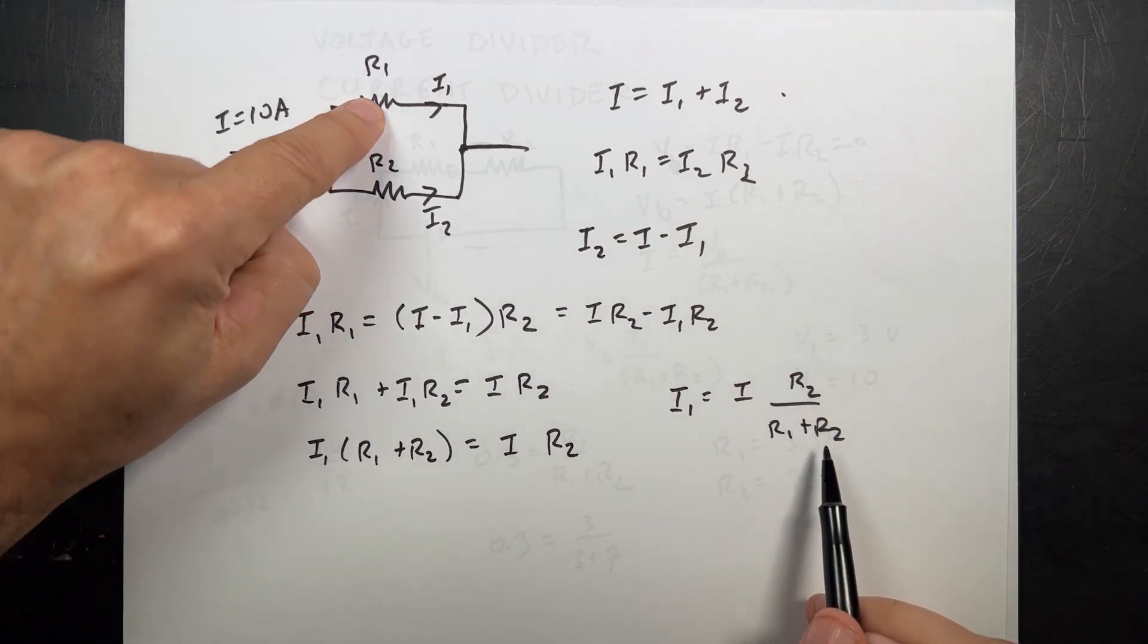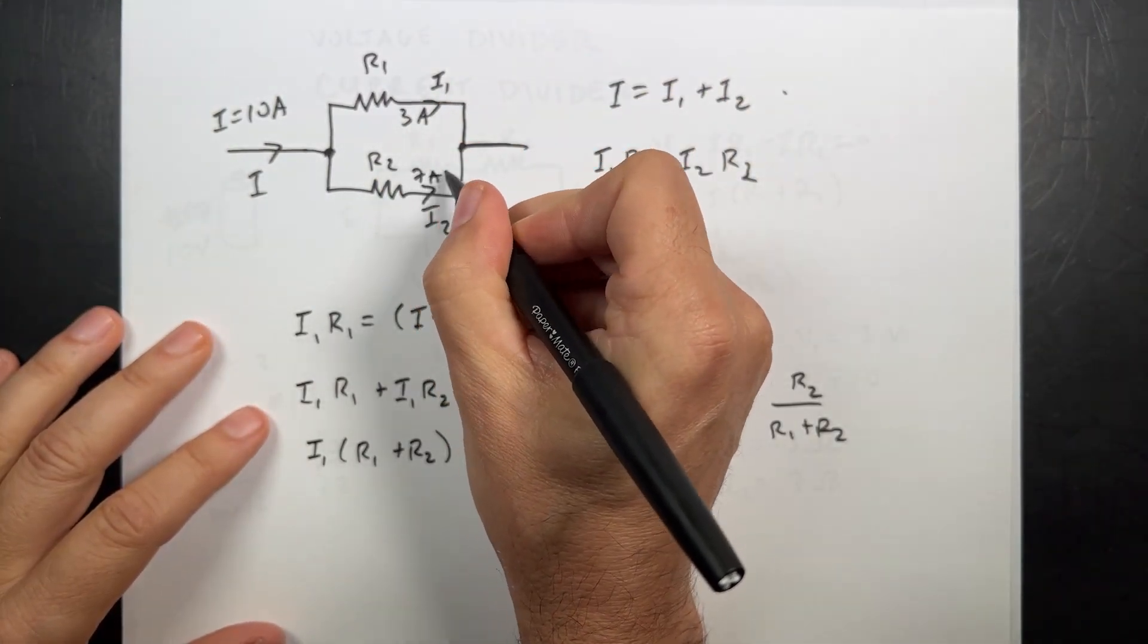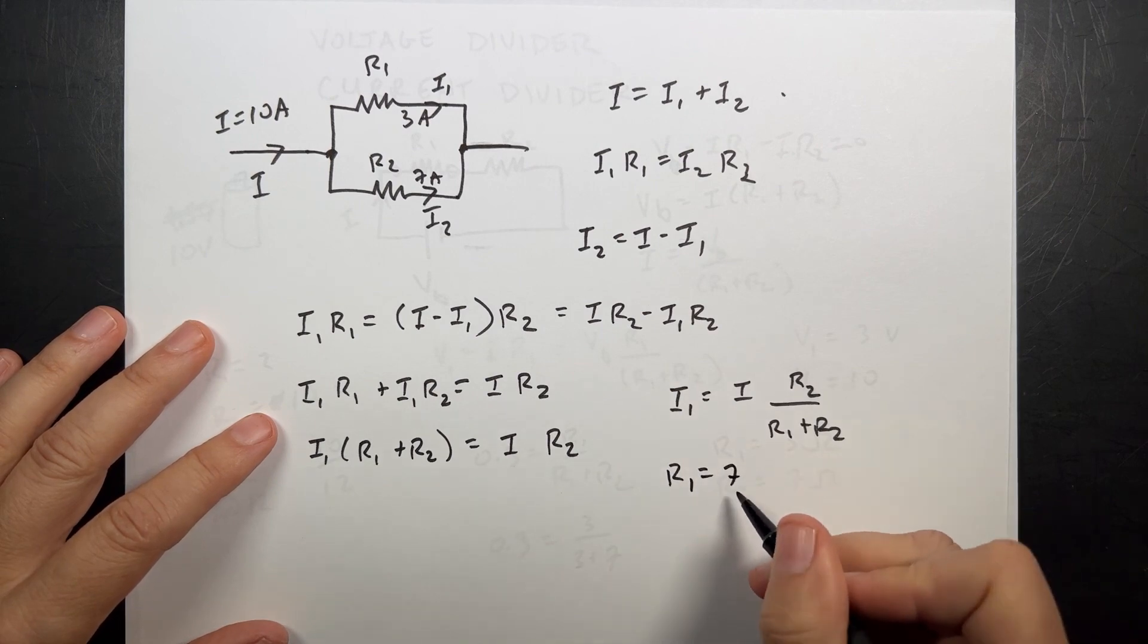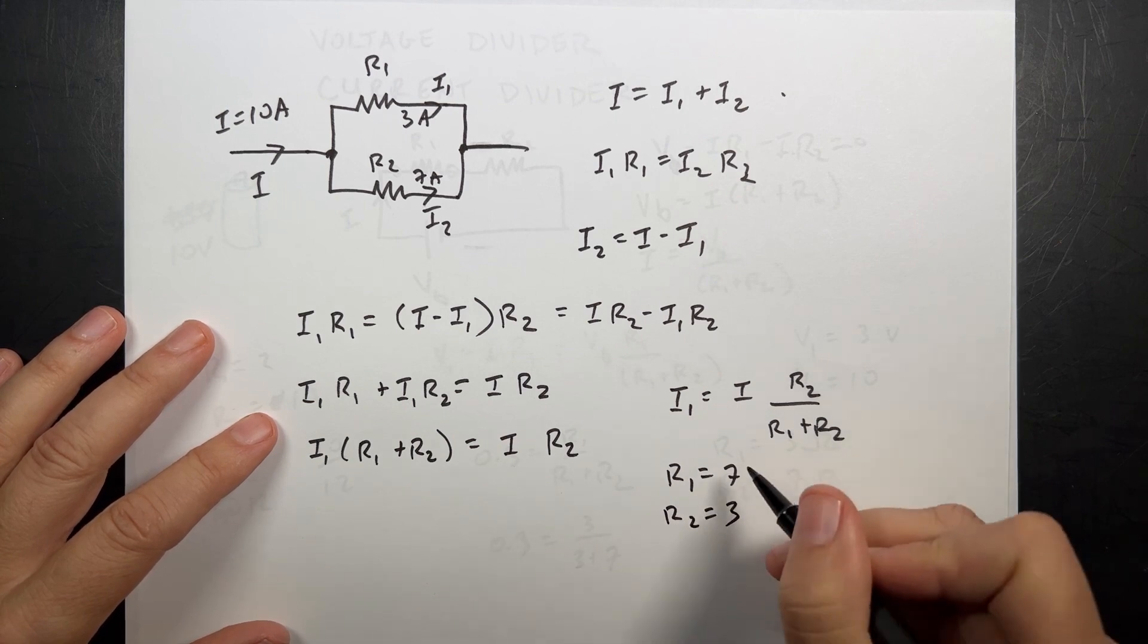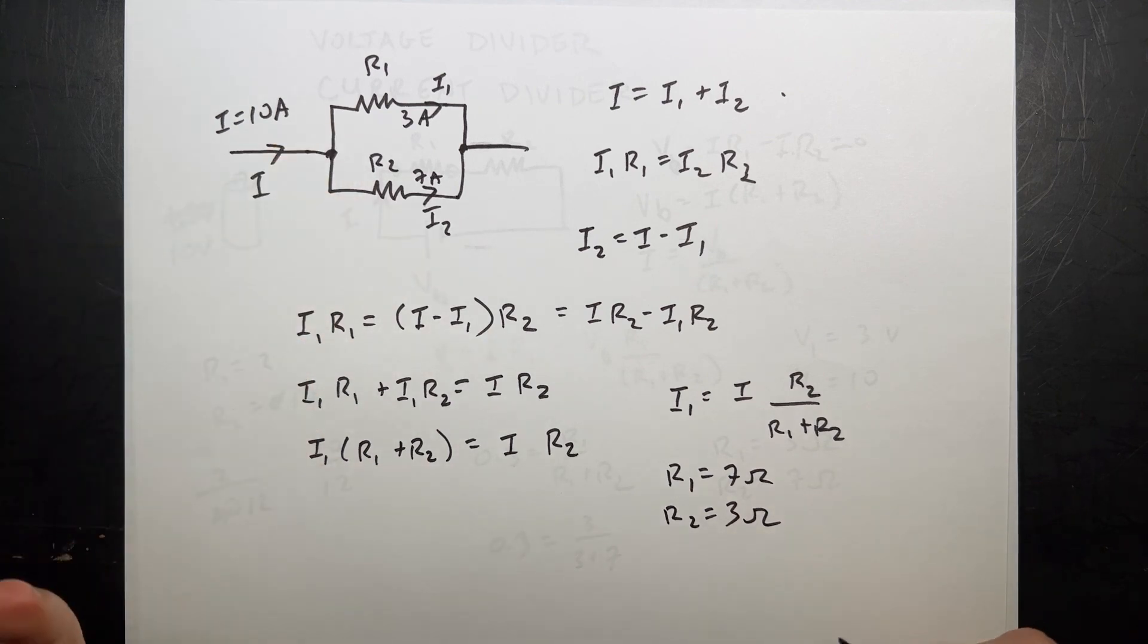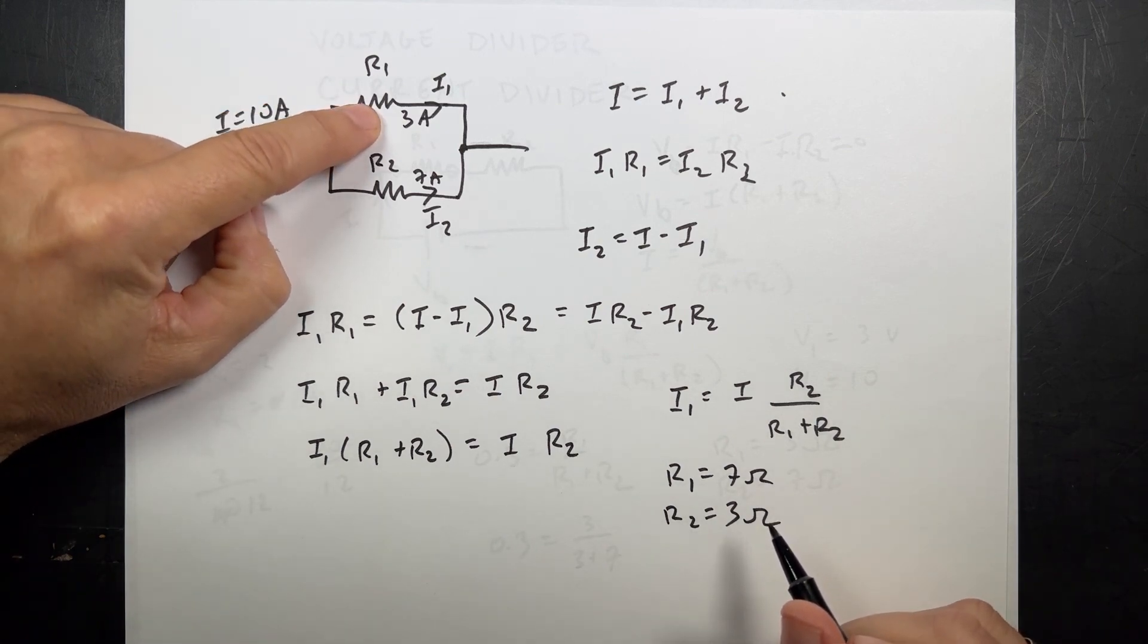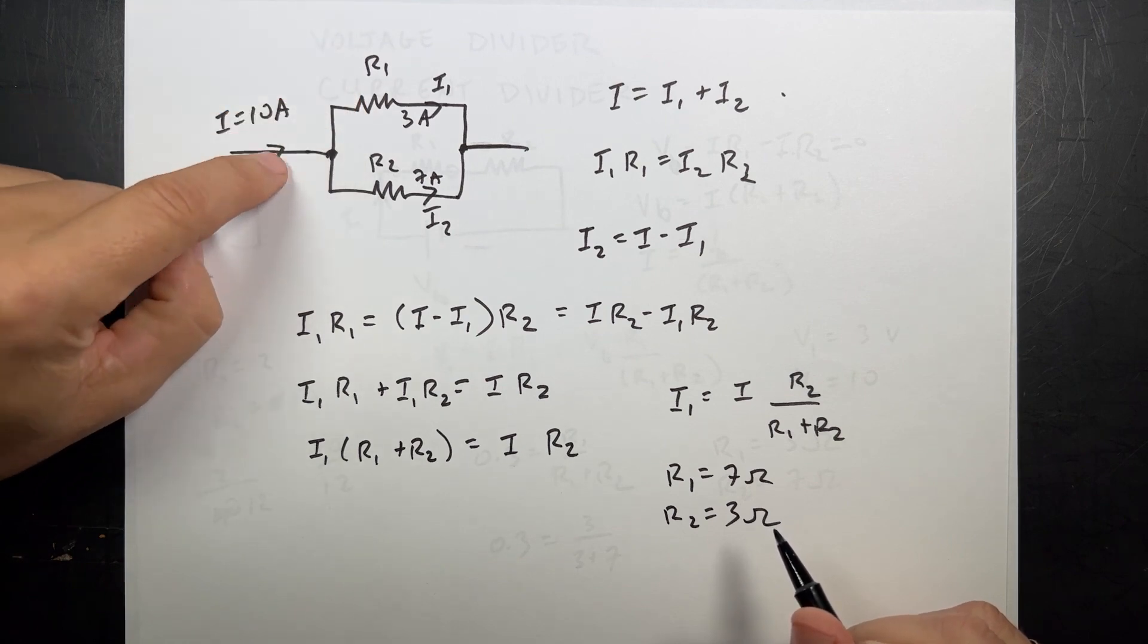So if I want 3 amps to go through this, so if I want this to be 3 amps and this to be 7 amps, then I would say R1 would be 7 ohms, R2 would be 3 ohms. So in that case, if this is 7 ohms, then less of the current is going to go through the more resistance. But it is still a current divider.